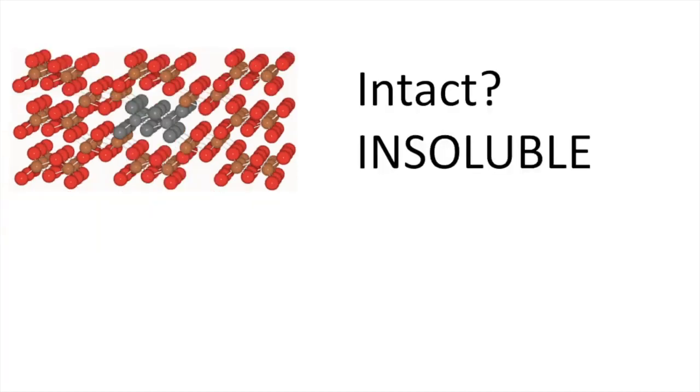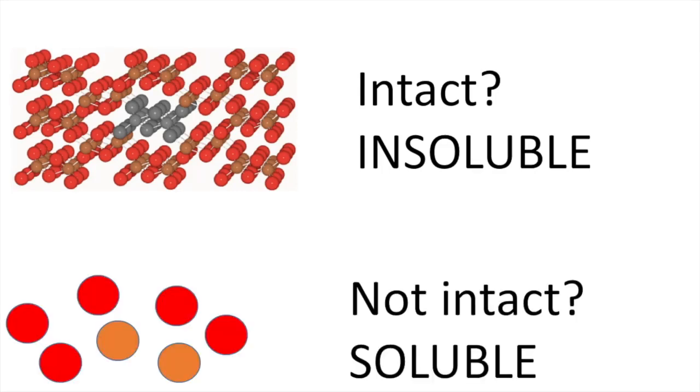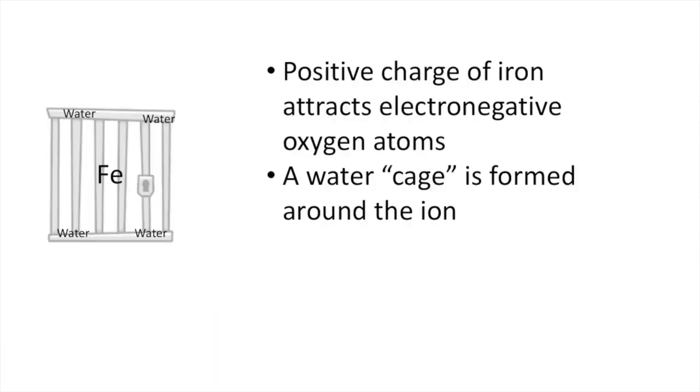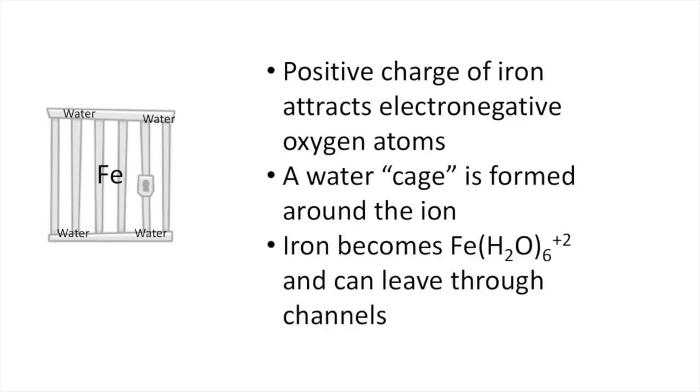The oxidation state has to be changed because the iron atoms are insoluble as long as the lattice is intact. The mineral lattice has to be dissolved, and this is accomplished by reducing the iron because the positive-2 charge attracts the electronegative oxygen atoms in water, forming a water cage around the ion. Iron becomes a soluble, hydrated Fe2+ ion and then can be released from ferritin through the channels.